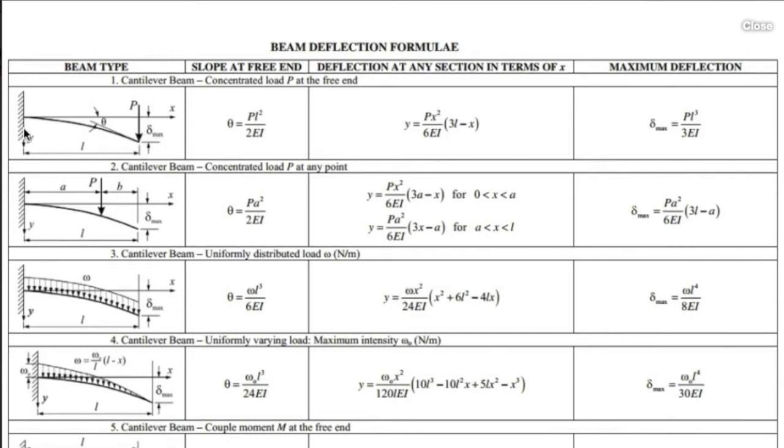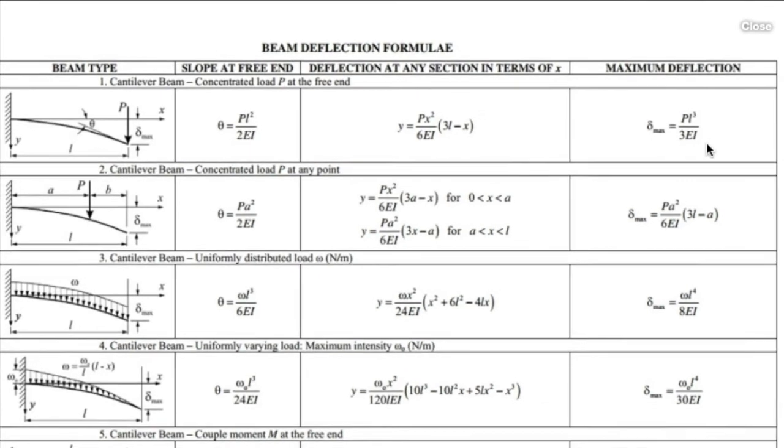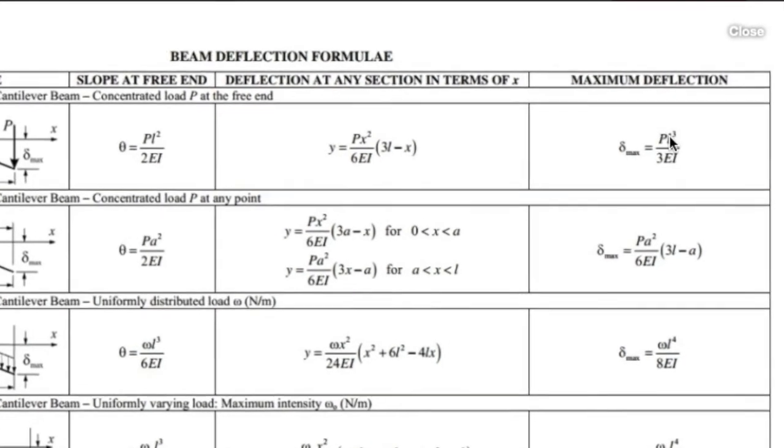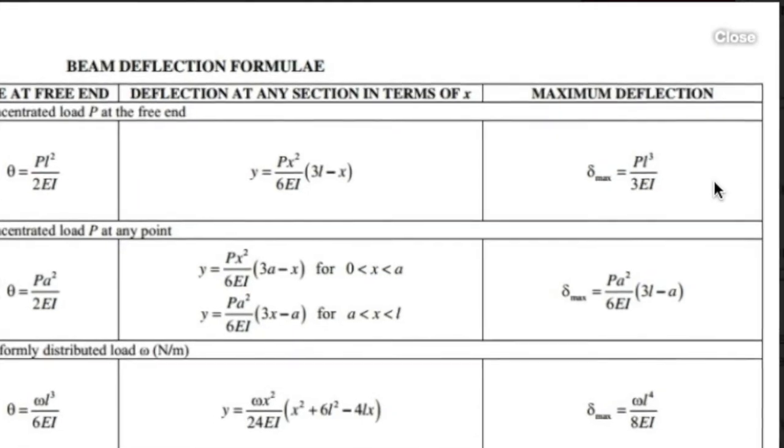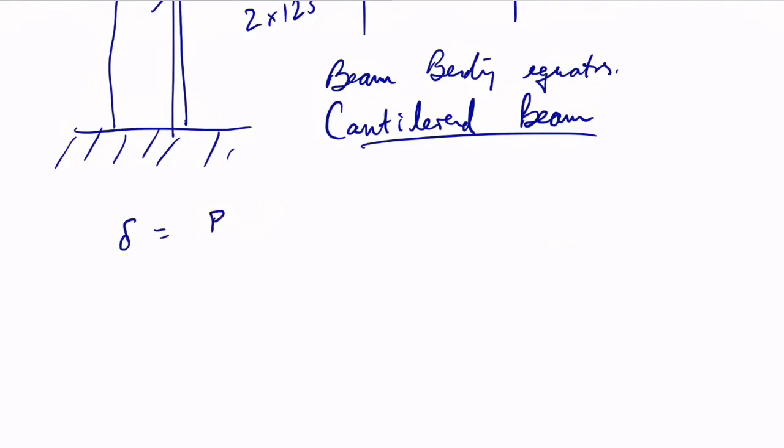So the deflection is equal to PL cubed over 3EI. The deflection is equal to PL cubed over 3EI. So what is each of these things?